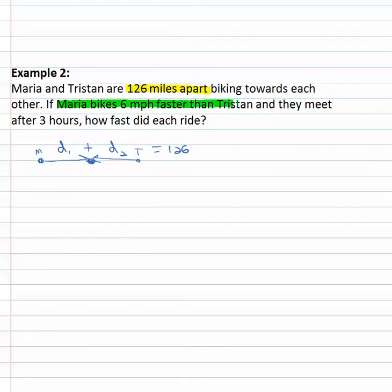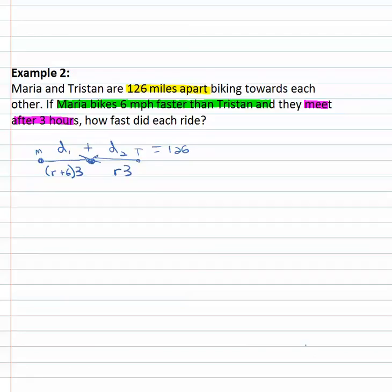We're told that Maria bikes six miles per hour faster than Tristan — that's talking about the rate. We don't know Tristan's rate, but Maria's rate must be six miles per hour faster, represented as R plus six. We're also told they meet after three hours, so the time is three hours. Multiplying each rate by the time and adding the distances equals one hundred twenty-six.